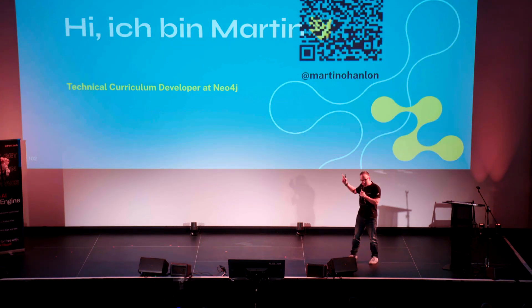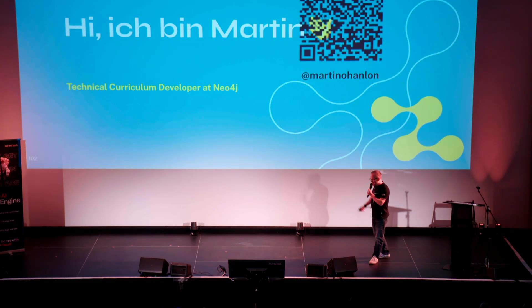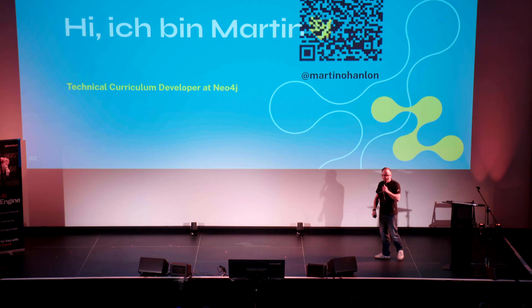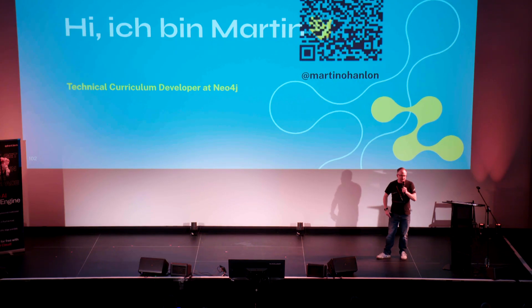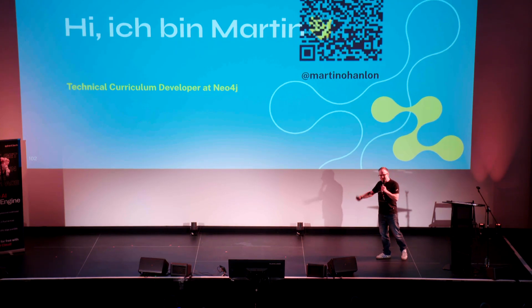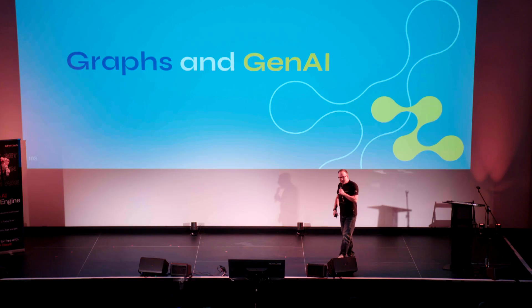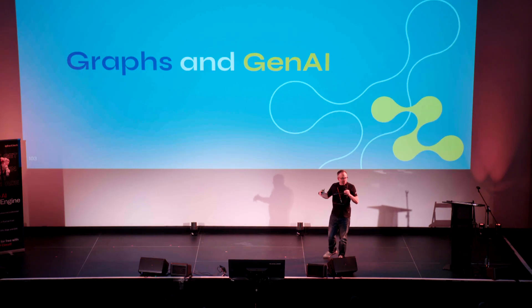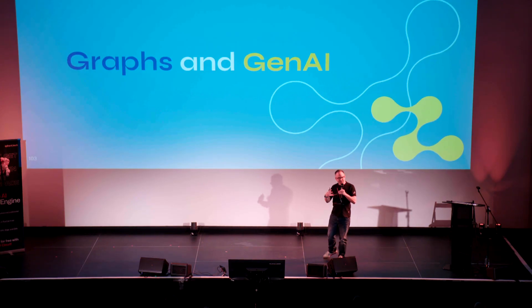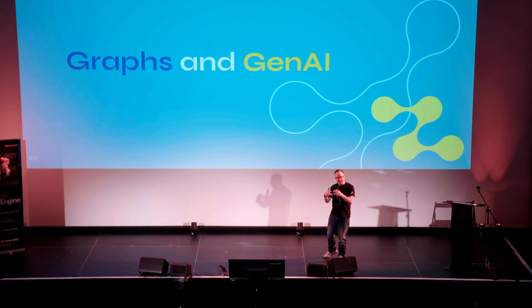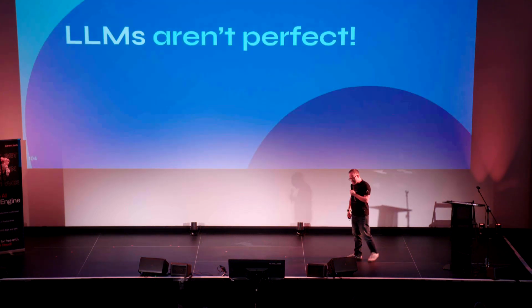My name's Martin O'Hanlon. I work for Neo4j. Neo4j is a graph database company. And I want to tell you a little bit about why graphs and gen AI are friends — or as we would say in the UK, where I'm from, mates. Why they're mates.